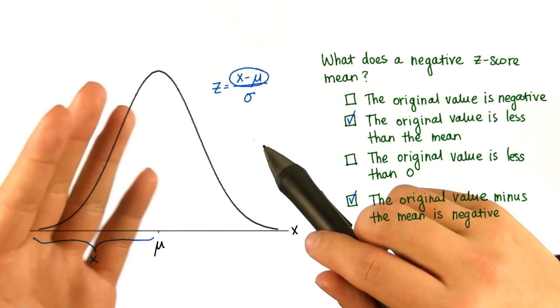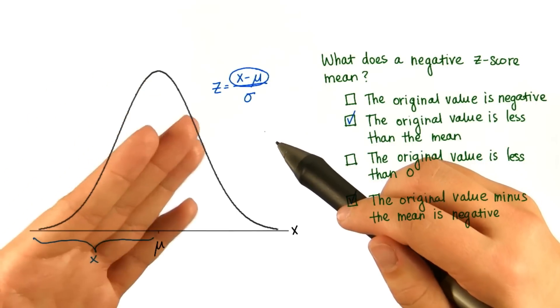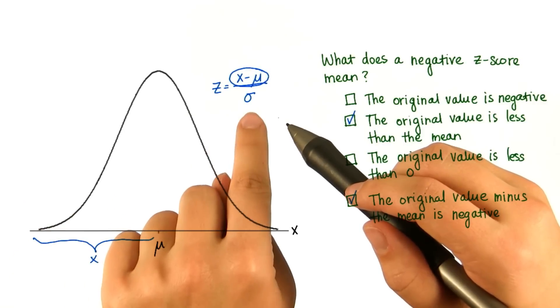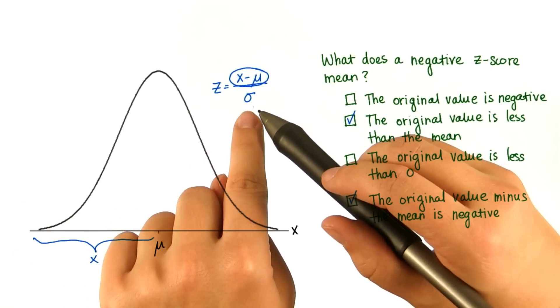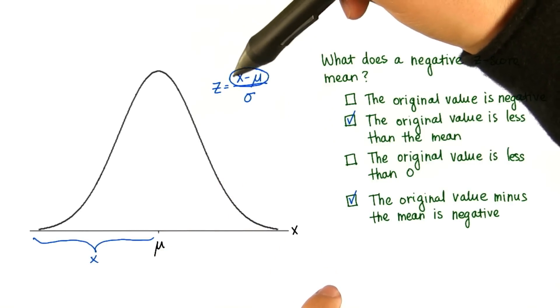And then we just took the average square deviation, which is still positive. And then we took the square root, which is still positive. So remember that the standard deviation will always be positive, which means that if the z-score is negative, then this numerator must be negative, and that must mean that x is less than μ.